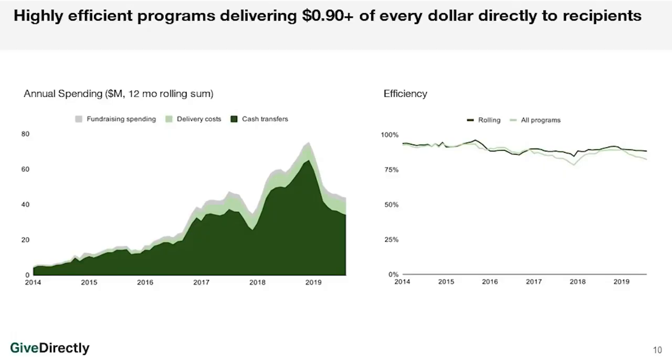I would be remiss at an EA conference not to show this slide demonstrating how efficient our approach to delivering cash transfers is. For all of you today who donate to GiveDirectly, you can be sure that 90 cents of every dollar you give us makes it to the direct beneficiary in one of the 11 countries in which we operate.